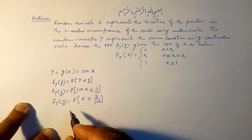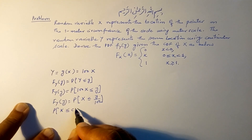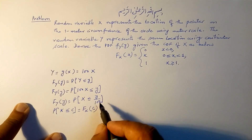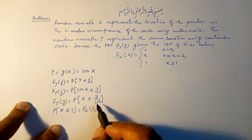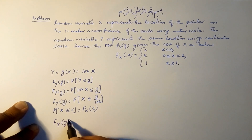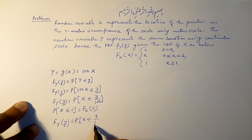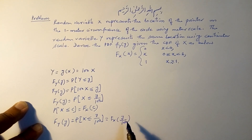We can manipulate this further: F_Y(y) = P(X ≤ y/100). From the definition of the CDF, the probability that X remains below some value C is given by the CDF evaluated at that point. Therefore, F_Y(y) = F_X(y/100).